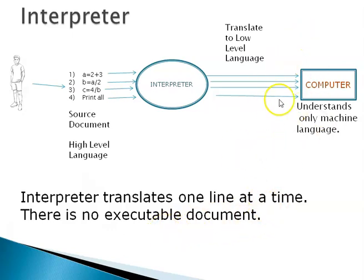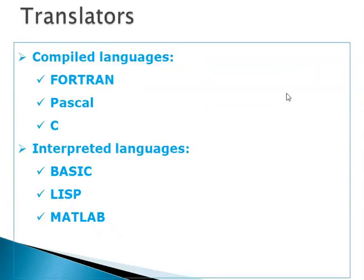Generally these languages Fortran or Pascal or C that we are going to study, these are compiled—that is, there is a low-level document, there is a high-level document—whereas BASIC, LISP, and MATLAB, they are interpreted languages. There is no machine language document.